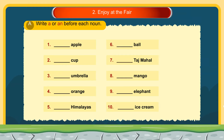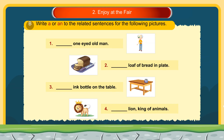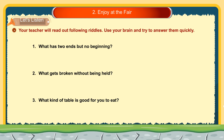Exercise A: Write 'a' or 'an' before each noun. Exercise B: Write 'a' or 'an' in the related sentences for the following pictures. Let's listen. Your teacher will read out the following riddles. Use your brain and try to answer them quickly.